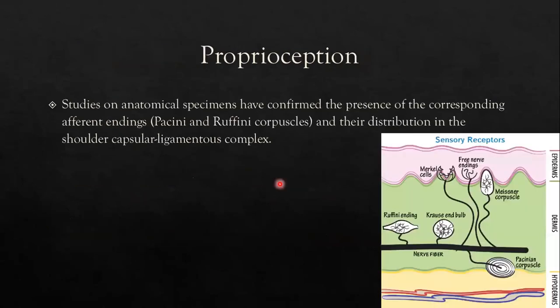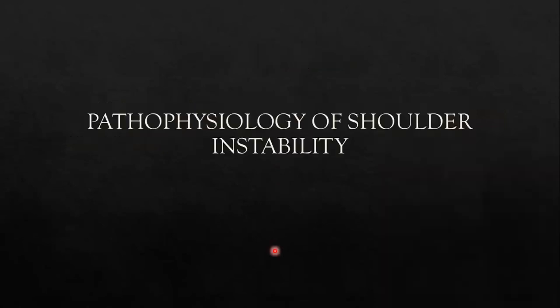Proprioception involves many different cells and components acting simultaneously through various muscles. Studies on cadaveric specimens have confirmed the presence of afferent endings such as Pacinian and Ruffini corpuscles distributed in the shoulder capsular ligamentous complex. Now, having reviewed the normal biomechanical factors, we turn to clinically relevant pathophysiology of shoulder instability.